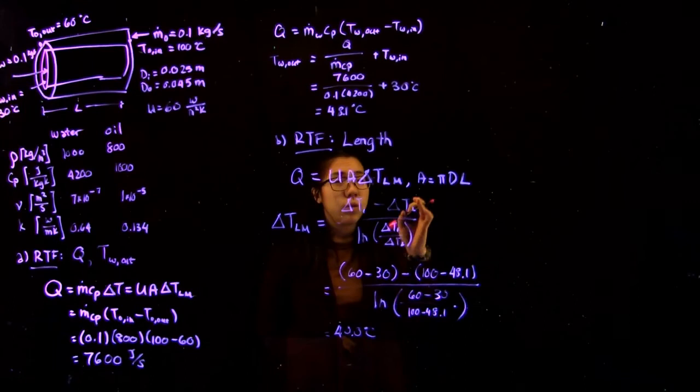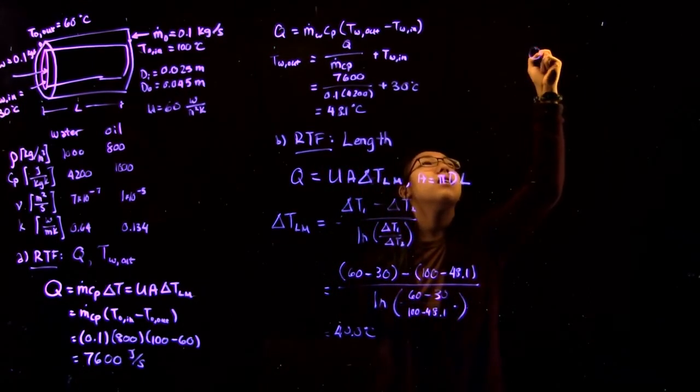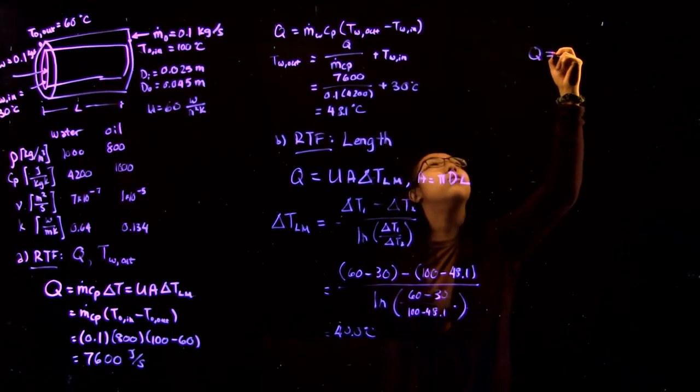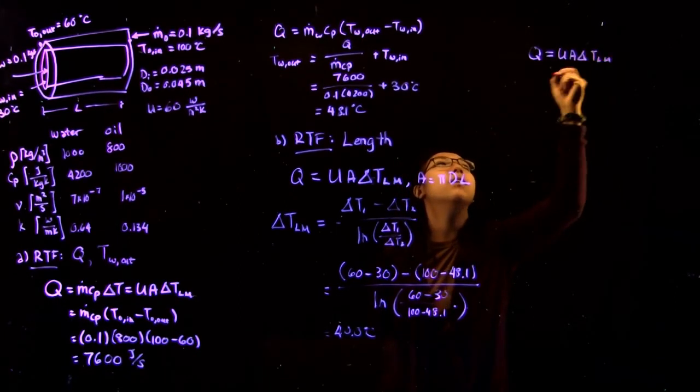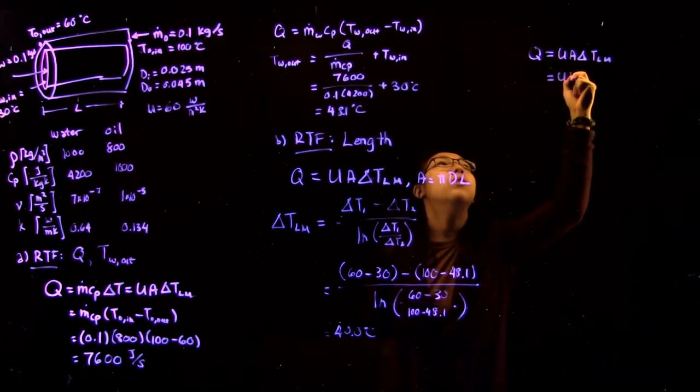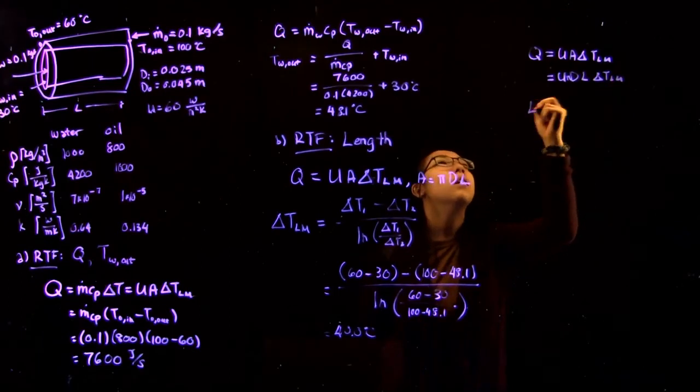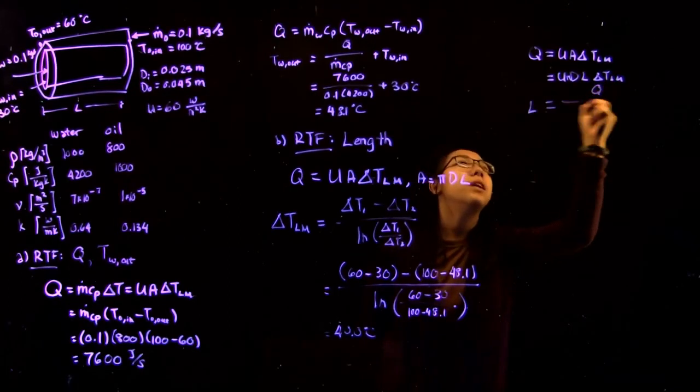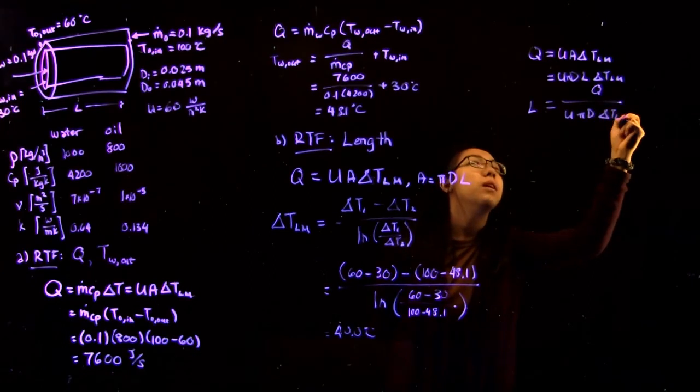So the last thing we have to do is just simply solve for the length. We've said that Q is equal to UA times delta T log mean, which is equal to U pi DL delta T log mean. Isolating for L, we have Q over U pi D delta T log mean.